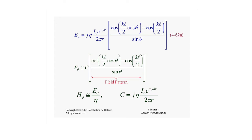After some mathematical manipulation and variation, the total electric and magnetic components of the dipole antenna reduce to this equation, where C is Euler's constant and H_phi is approximated as E_theta divided by the intrinsic impedance.